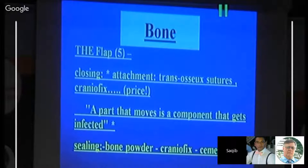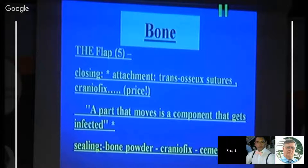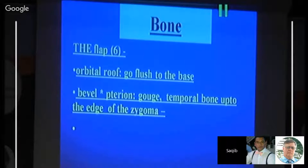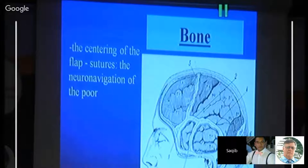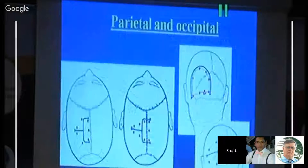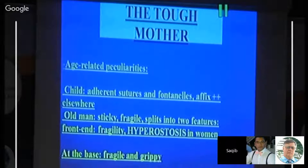For closure, transverse sutures and CranioFix devices should ideally be placed, but be mindful of hardware costs. The bone must be fixed — moving bone is more prone to infection. Bone powder, CranioFix, or cement can be used for immobilization. When making the flap, go flush to the orbit and base, bevel the edges to prevent sinking. In temporal bone work, go up to the base of the zygoma. Always correlate your lesion with the cranial sutures as an anatomical guide to navigation.